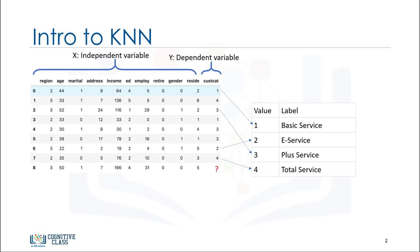Imagine that a telecommunications provider has segmented its customer base by service usage patterns, categorizing the customers into four groups. If demographic data can be used to predict group membership, the company can customize offers for individual prospective customers. This is a classification problem.